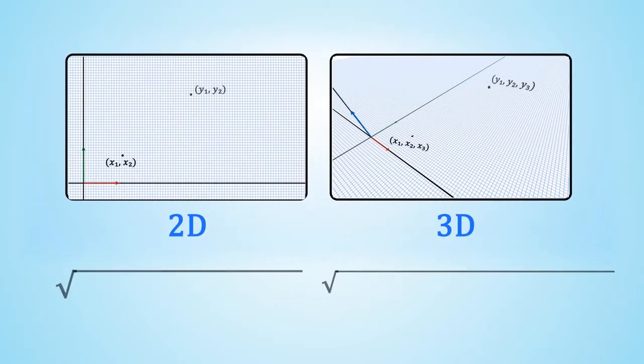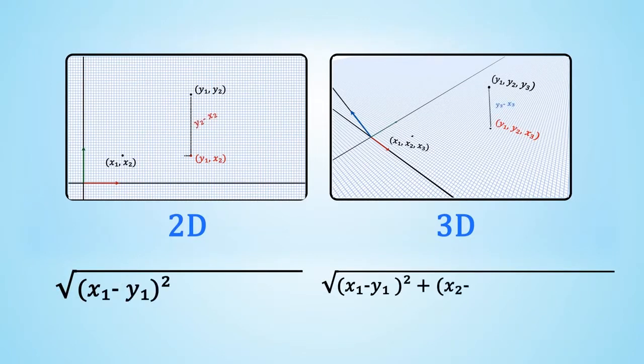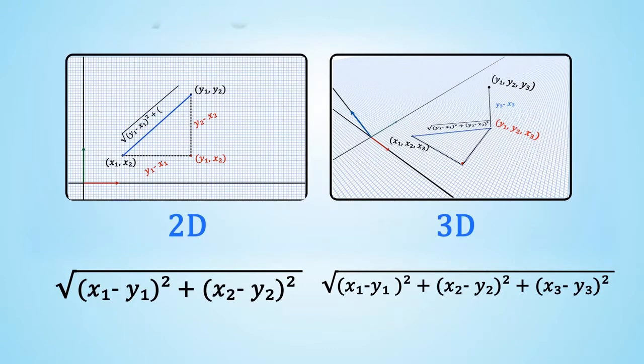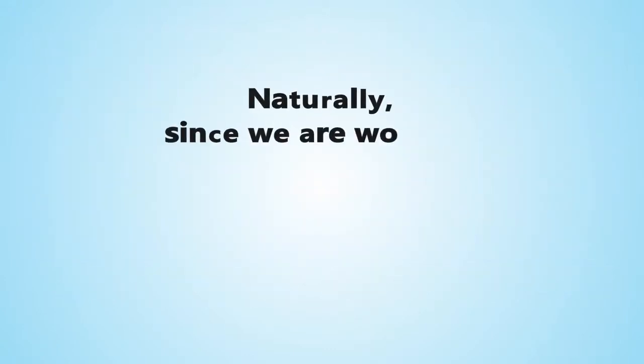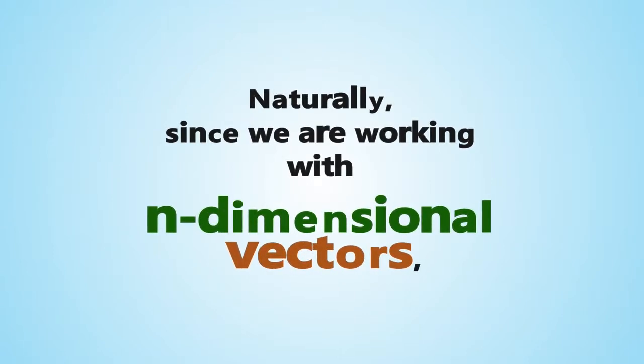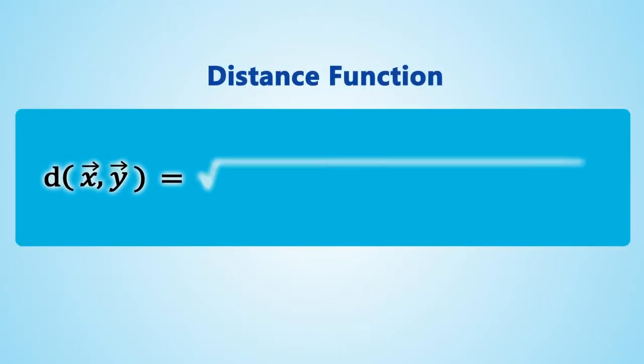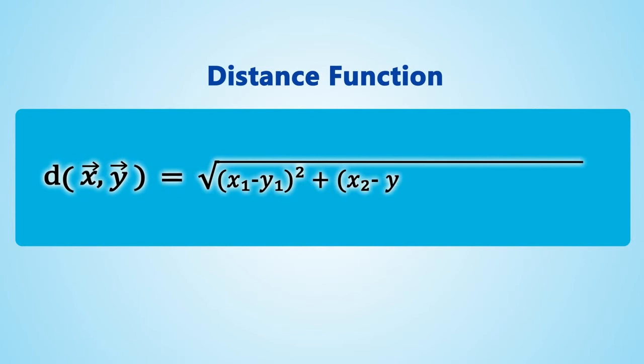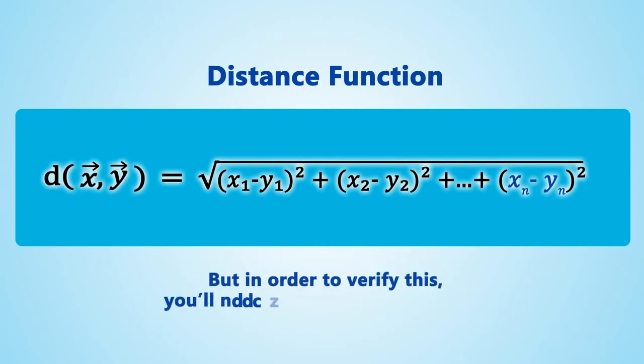To find a suitable candidate for a distance function d, we look to the 2D and 3D distance formulas for inspiration. Naturally, since we are working with n-dimensional vectors, we guess that d(x,y) equals the square root of (x₁-y₁)² plus (x₂-y₂)² up to (xₙ-yₙ)² is a distance function. But in order to verify this, you'll need a basic proof technique.